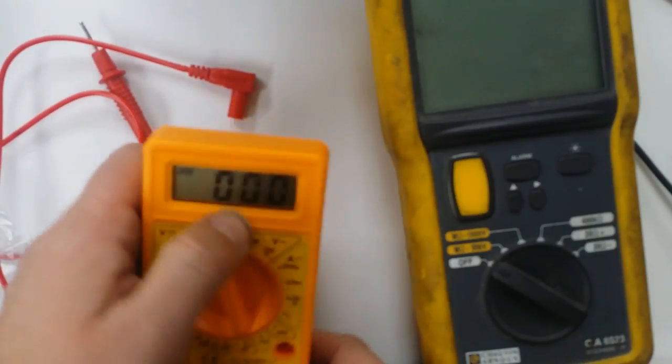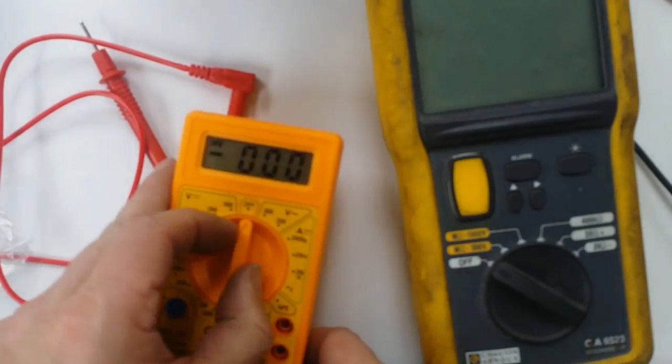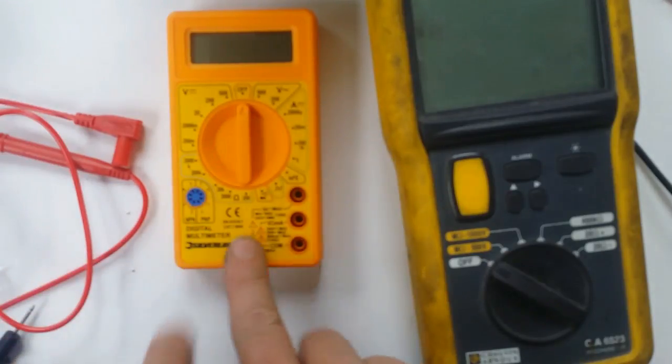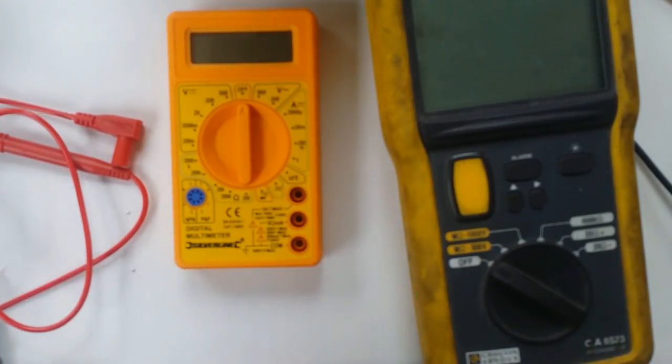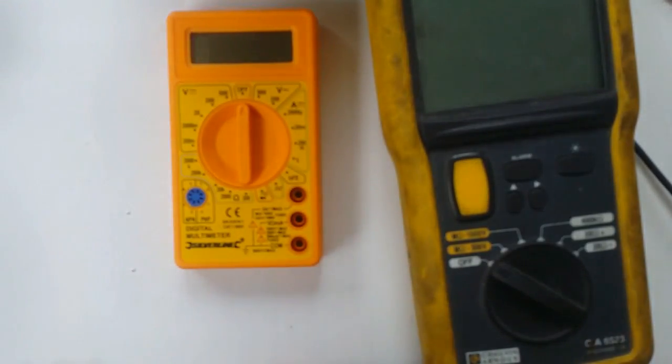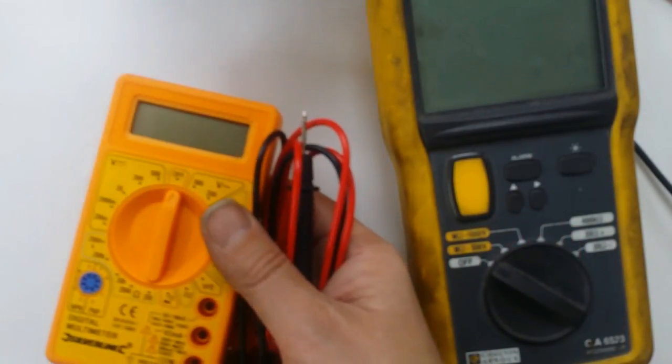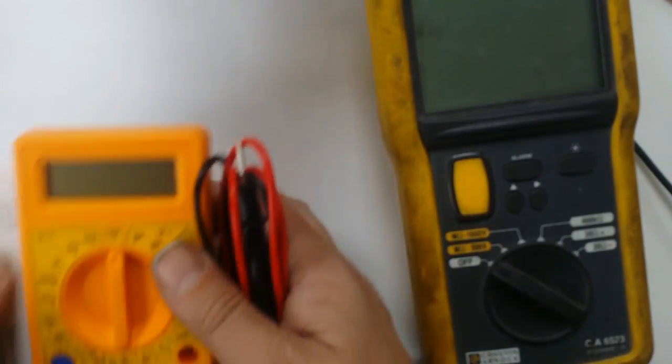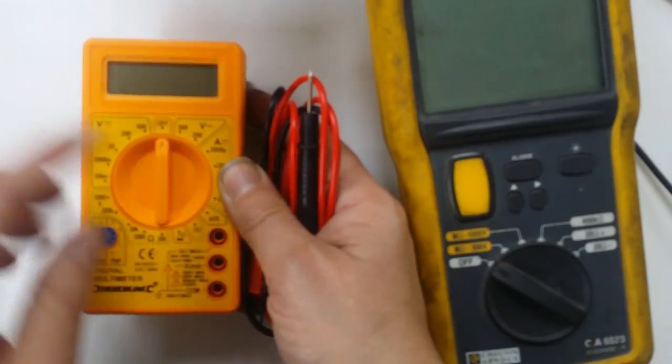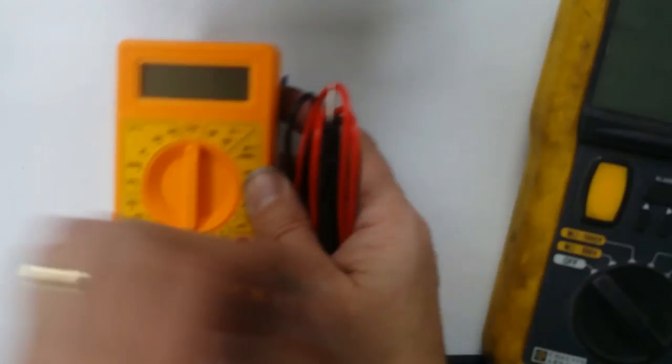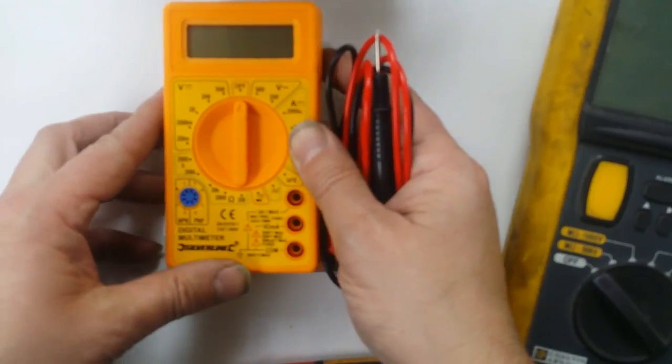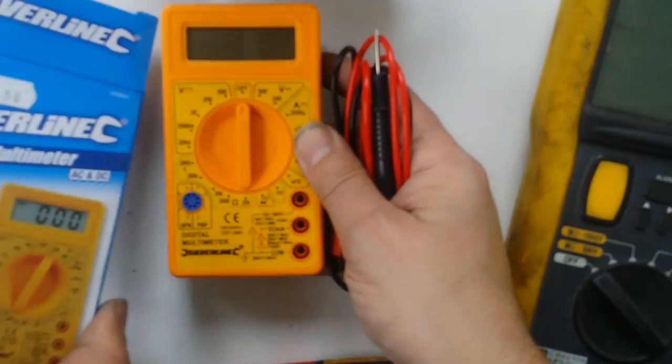But overall, for the amateur electronic person, this is an absolutely superb meter. And at less than six pounds, absolutely wonderful bargain. And this is going to now live in my car, so I've always got one to hand. But yeah, I just can't believe you can pick up this for, you know, £5.58.